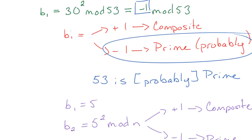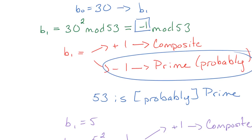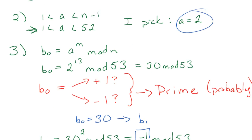So after b1, b2, b3, etc., b1 and on, we work in this same way, where if it's positive 1, it's composite. If it's negative 1, it's probably prime. b0 is the only time where positive 1 or negative 1 imply that it is prime.